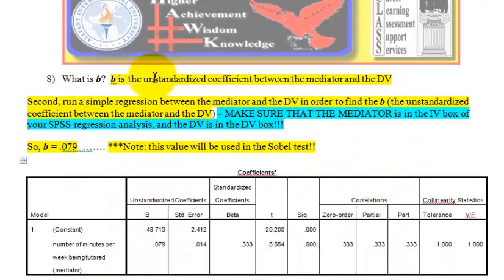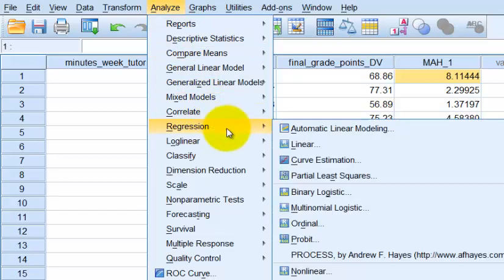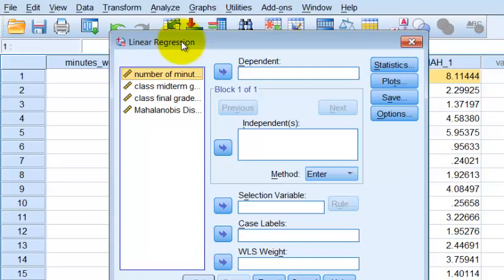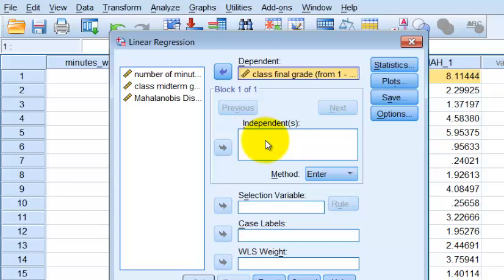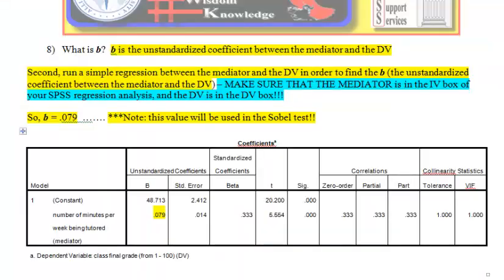Number eight: what is B? We need to do another regression. This time the DV is the class final grades, and the IV is the mediator — the tutoring minutes. Back in SPSS: Analyze, Regression, Linear. The DV is the class final grades, and the IV is the mediator, which is the tutoring minutes — not the moderator; they are related but not the same thing. Click OK, and there's our B — the unstandardized coefficient between the tutoring minutes and the DV.